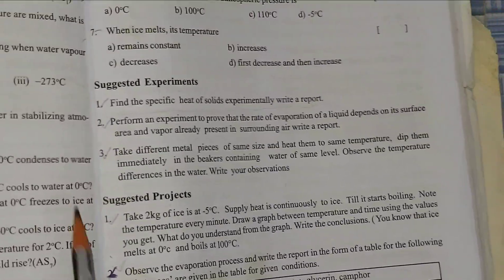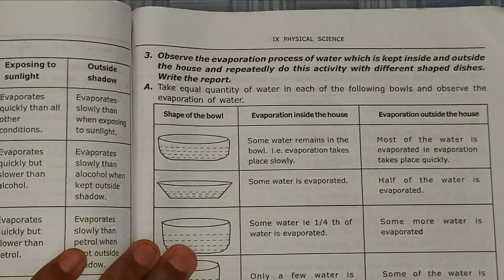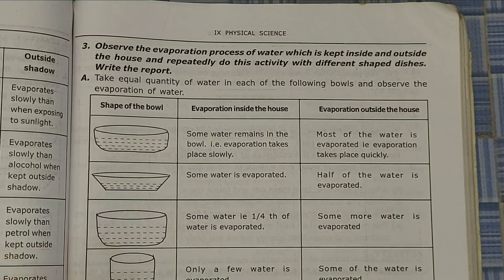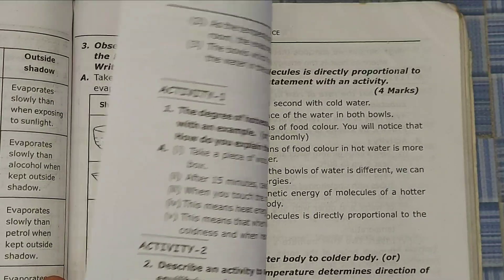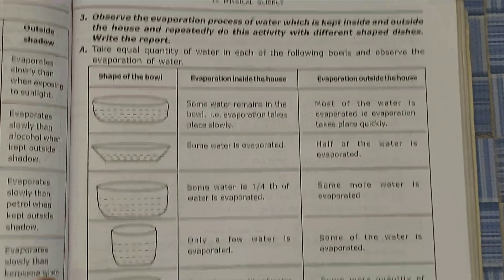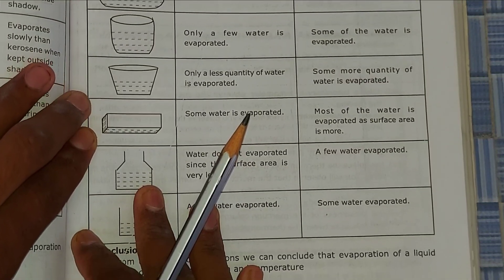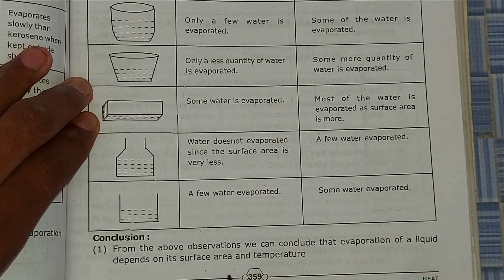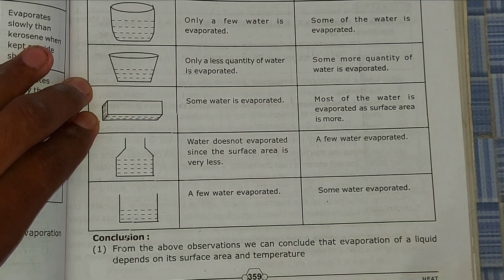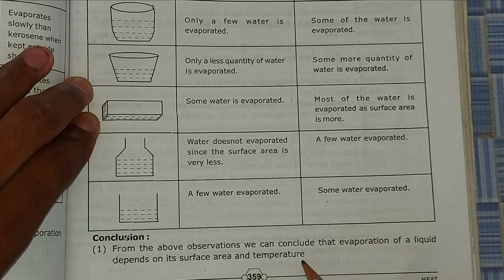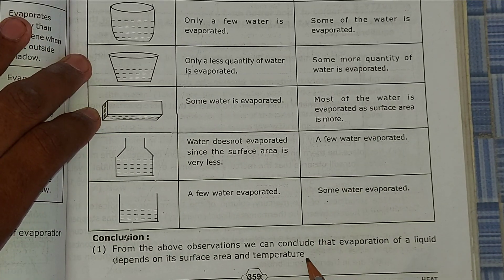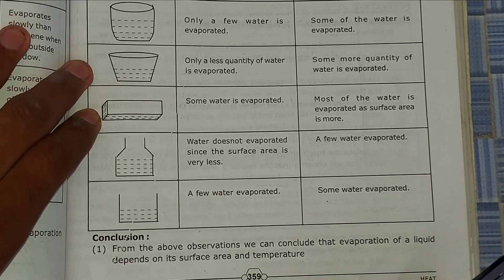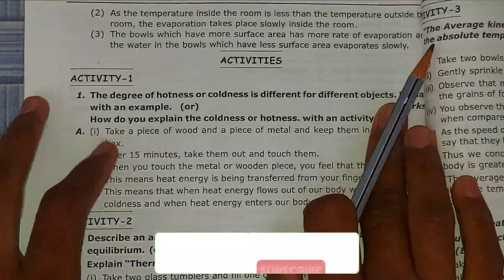Now we'll go to the third question. First let's see the third question in the textbook. Now see the third question answer in the Question Bank. The third question also has a table. This question answer continues on the next page as well. There are two more points on the next page.